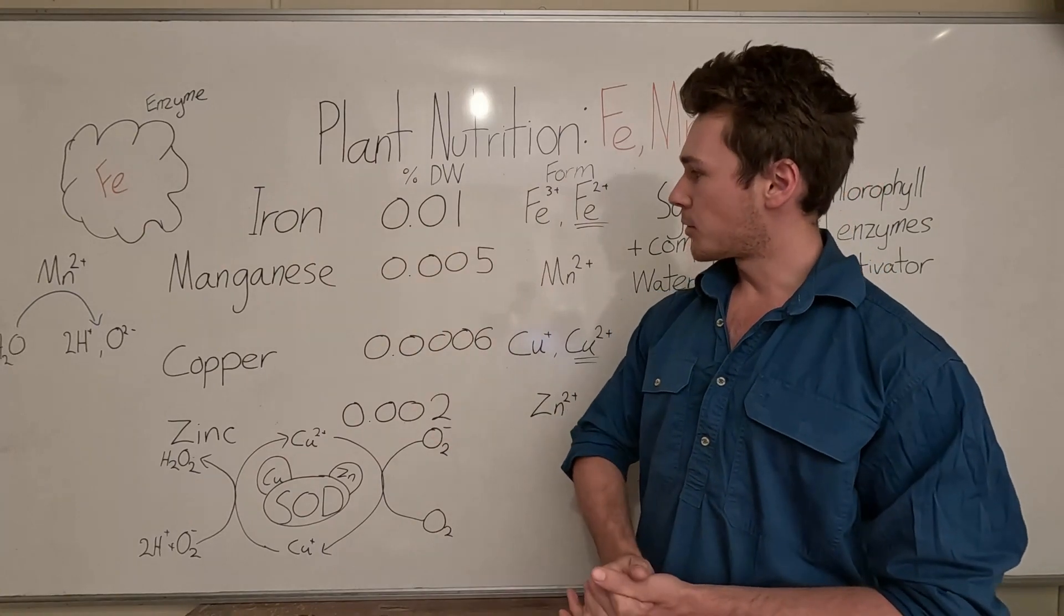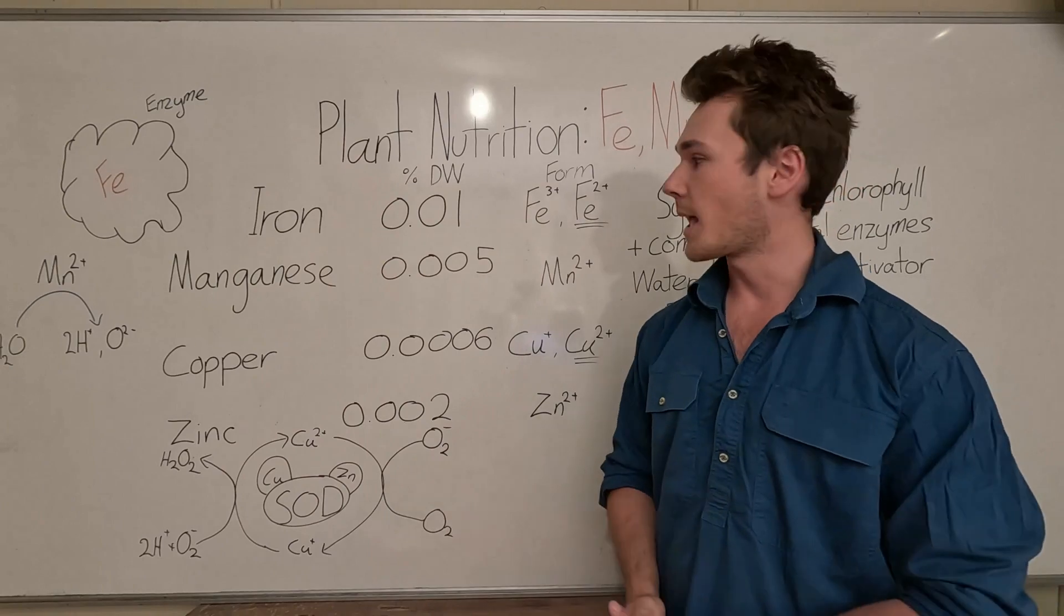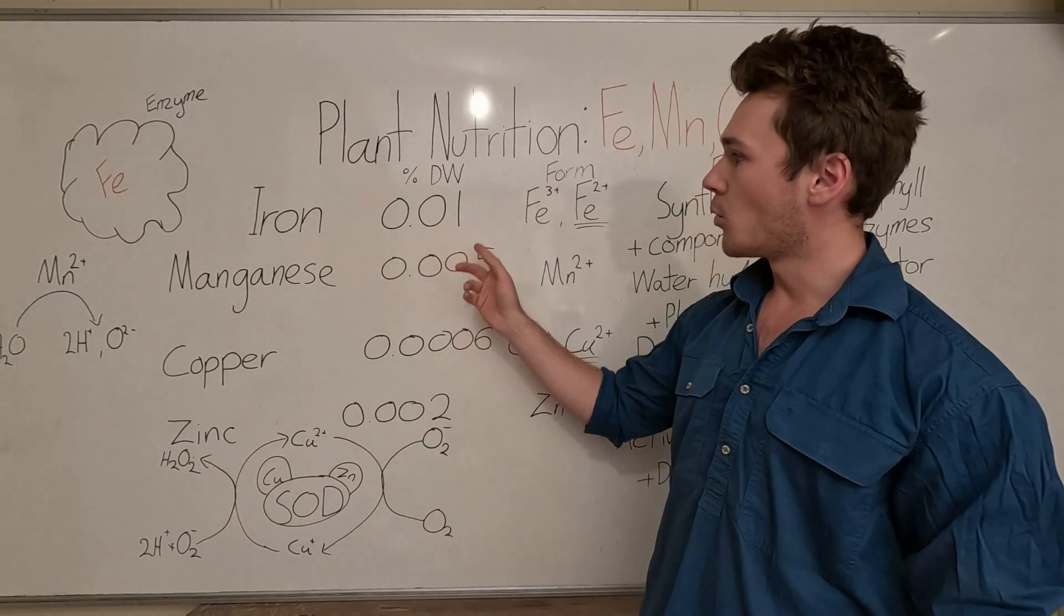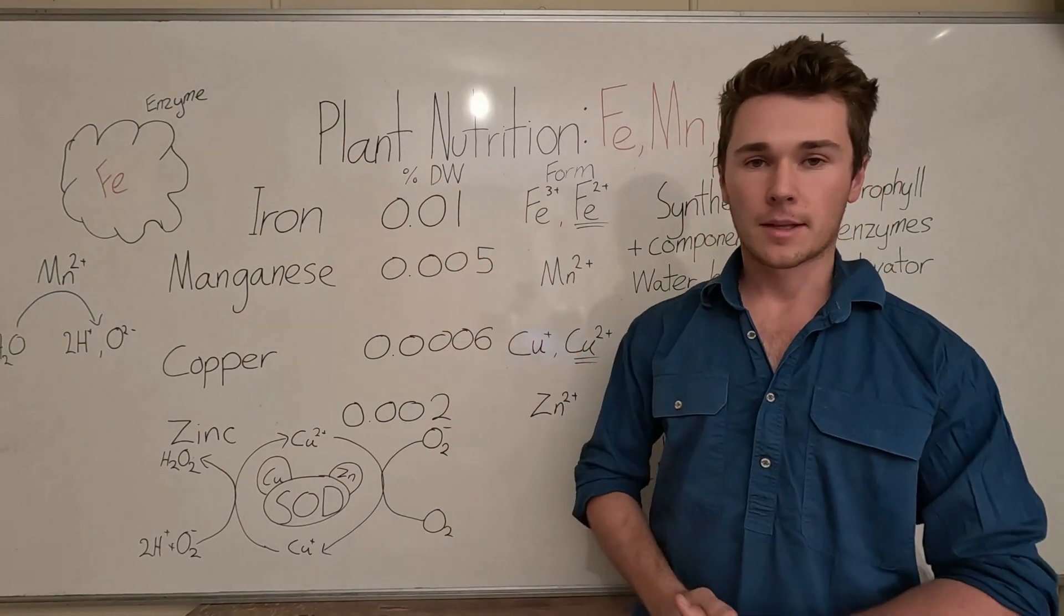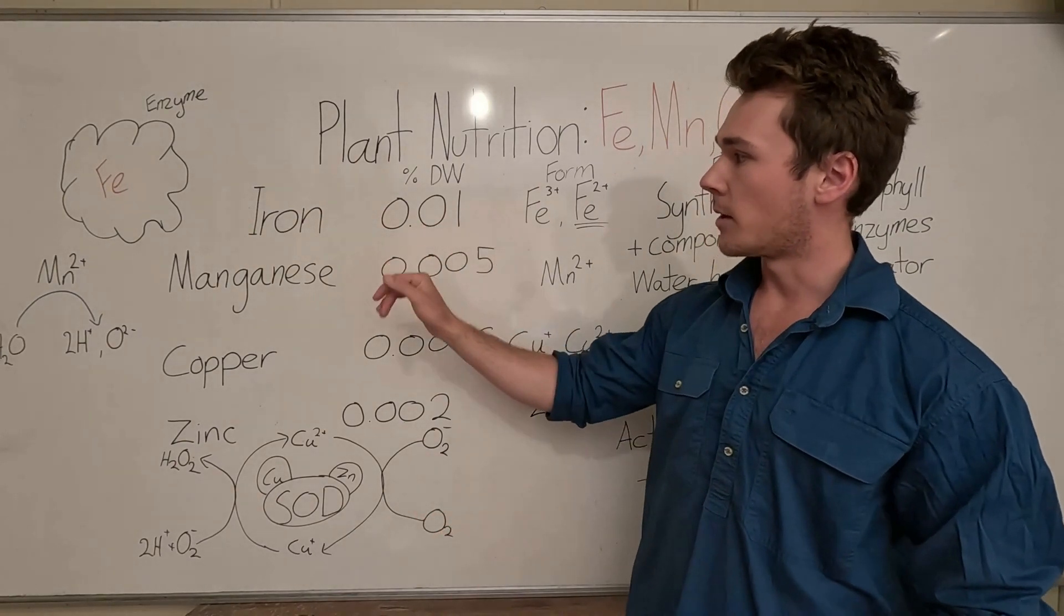So iron, it's probably the most used trace nutrient we have. It's used in 0.01% of our plant's dry weight. So if you dried out all the water, that's what you have left. We have 0.01% iron.